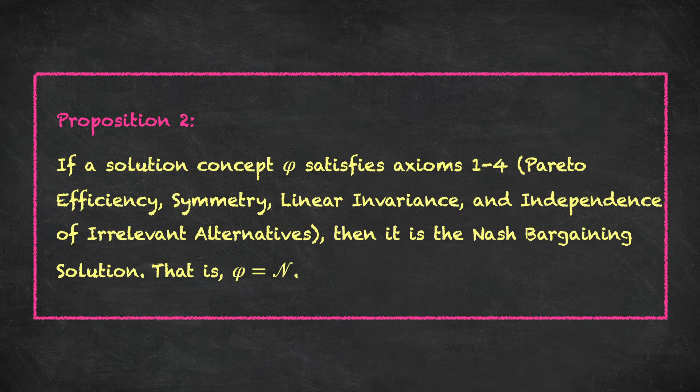As well as providing the foundational result in bargaining theory, this proposition really exemplifies the power of the axiomatic method. Remember, bargaining is a problem that economists studied for a long time and had very little to say about. Nash's approach using the axiomatic method was to write down the properties that you would like a solution to have, and as it turned out, the list precisely characterized only one possible solution: the Nash bargaining solution of choosing an alternative to maximize the product of utilities.